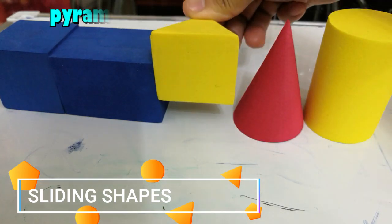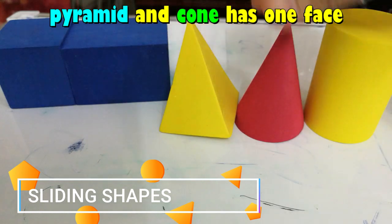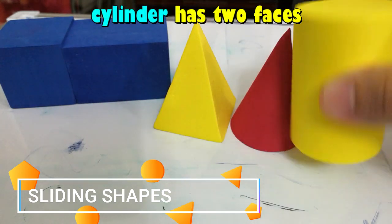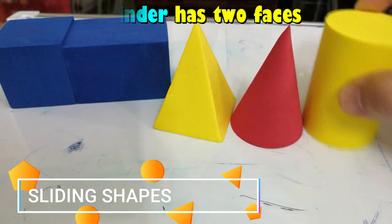They have one face. The pyramid and cone have one face, and the cylinder has two faces. So it can slide.